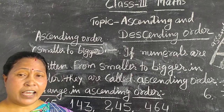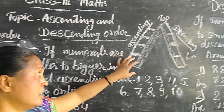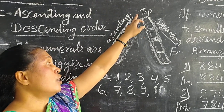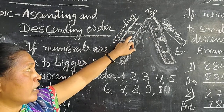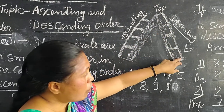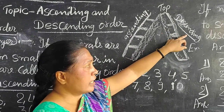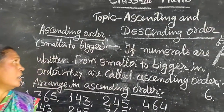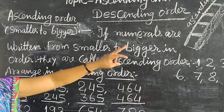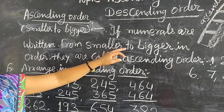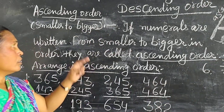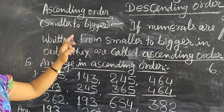So what is ascending order? Look at this picture. We will go from the bottom floor to the top floor. So this is ascending order. If numbers are written from smaller to bigger in order, they are all ascending order. So in ascending order, we go from smaller to bigger.